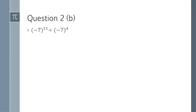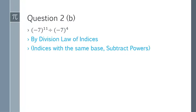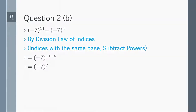Question 2b: (-7)^11 divided by (-7)^4. We use the same division formula — same base, subtract powers. We take (-7) as the common base and subtract: power 11 minus power 4 gives (-7)^7. That is the answer for question 2b.